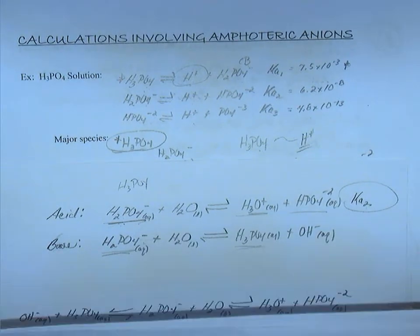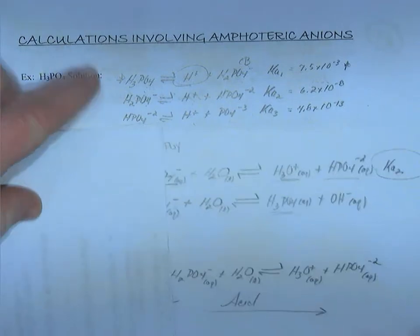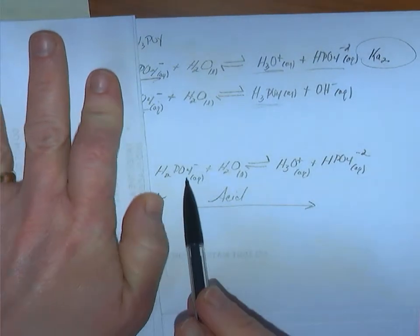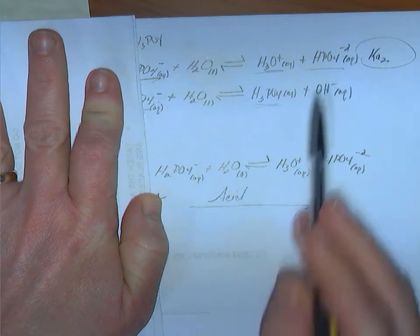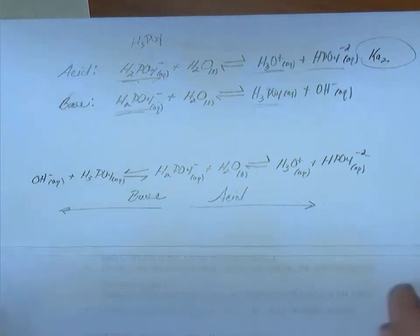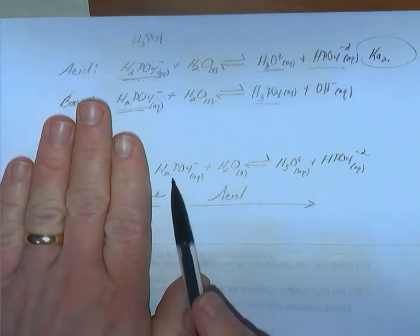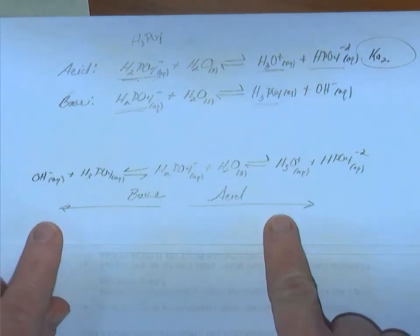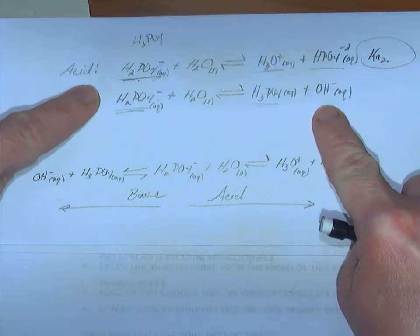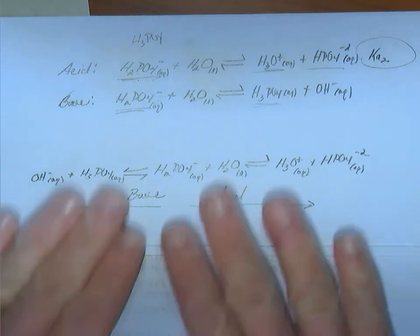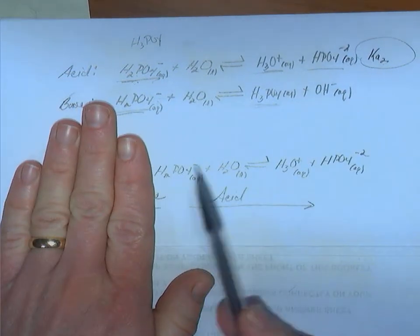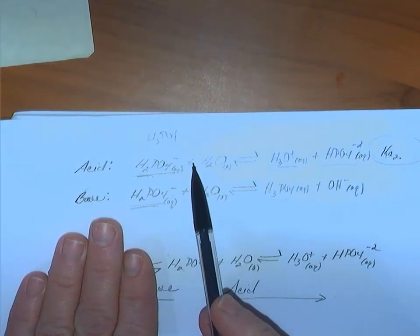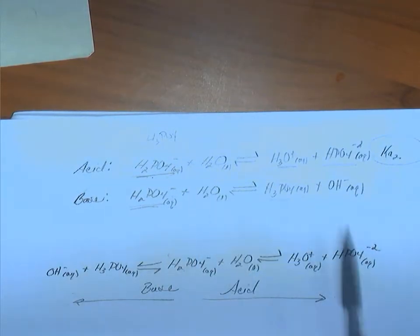Another way to write this is to show both behaviors in a combined equation. On the right side H2PO4⁻ is behaving as an acid, releasing the hydrogen ion; on the left side it is behaving as a base, accepting the hydrogen ion. We could flip-flop the sides — it doesn't matter which is on the left or right. This is just another way of writing the same reactions: one releasing the hydrogen ion, one accepting the hydrogen ion.